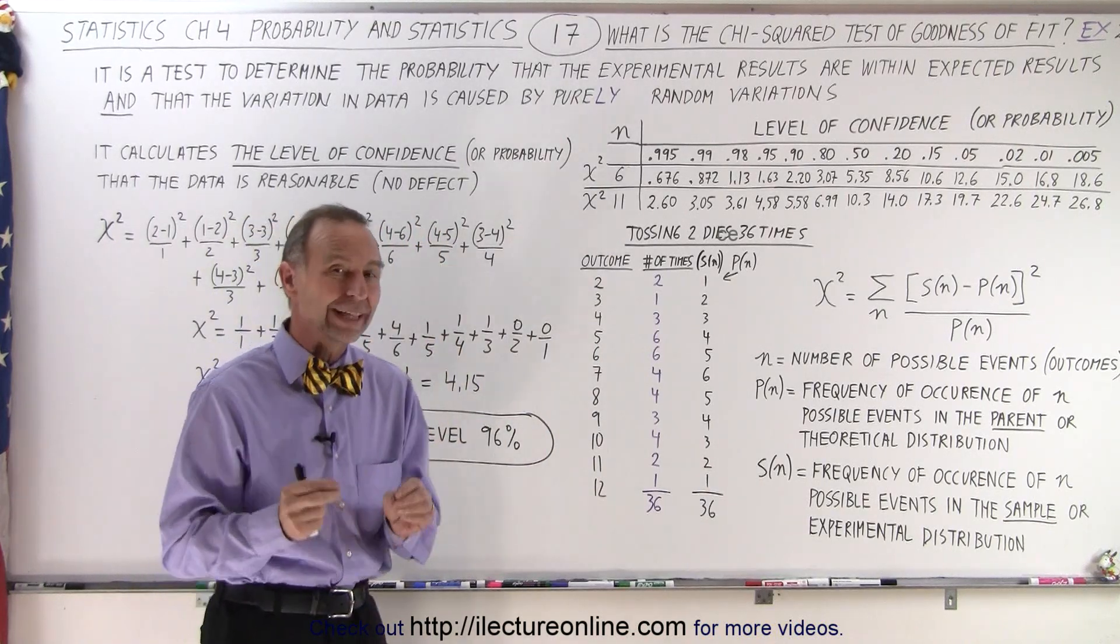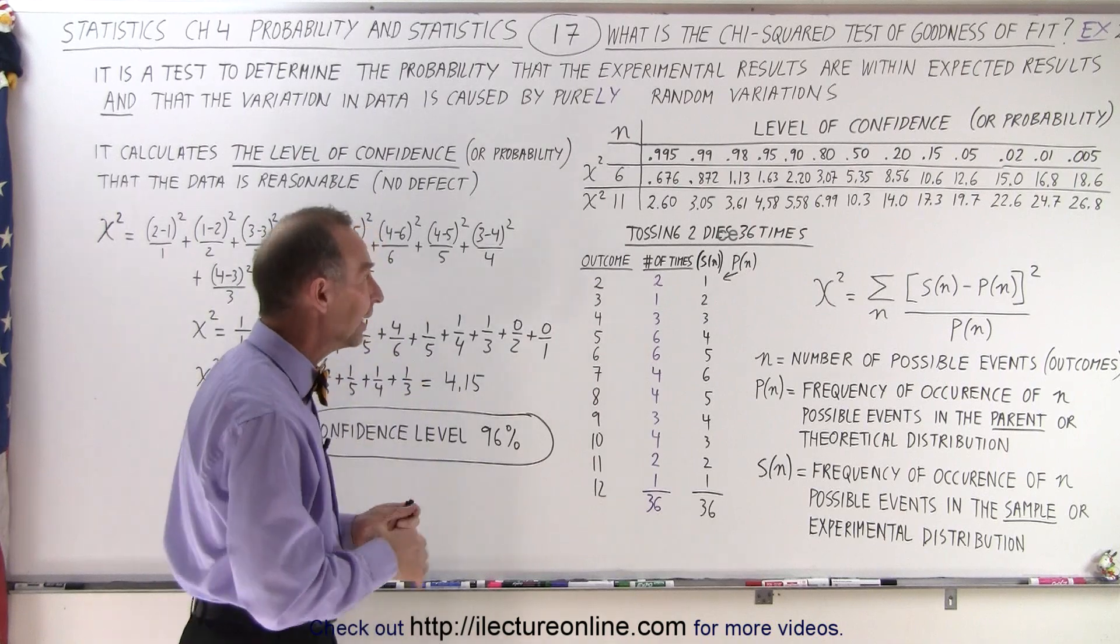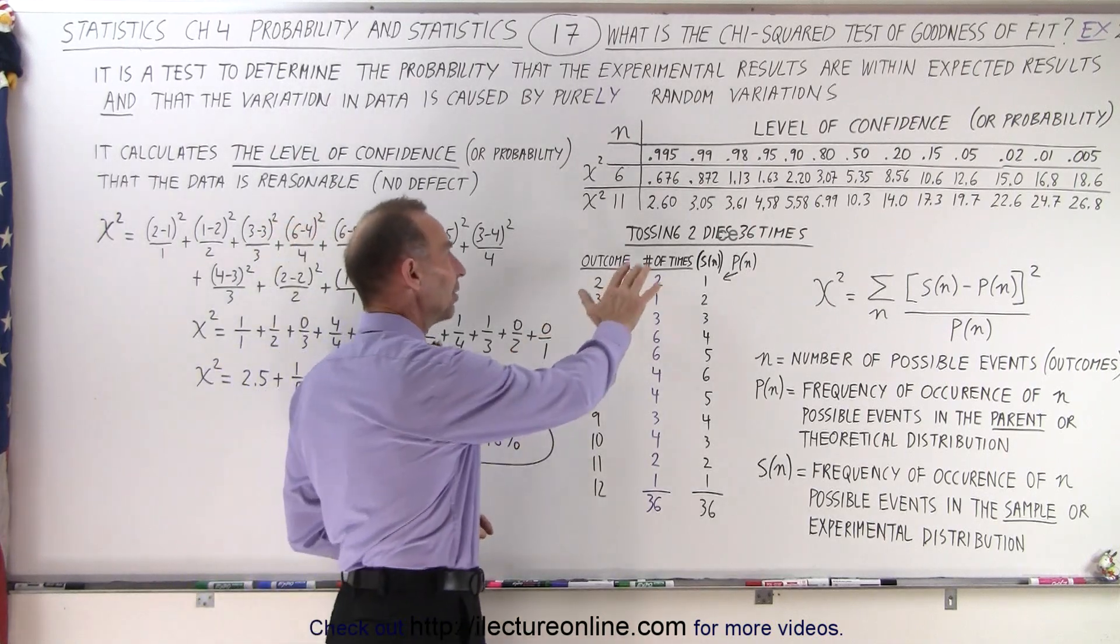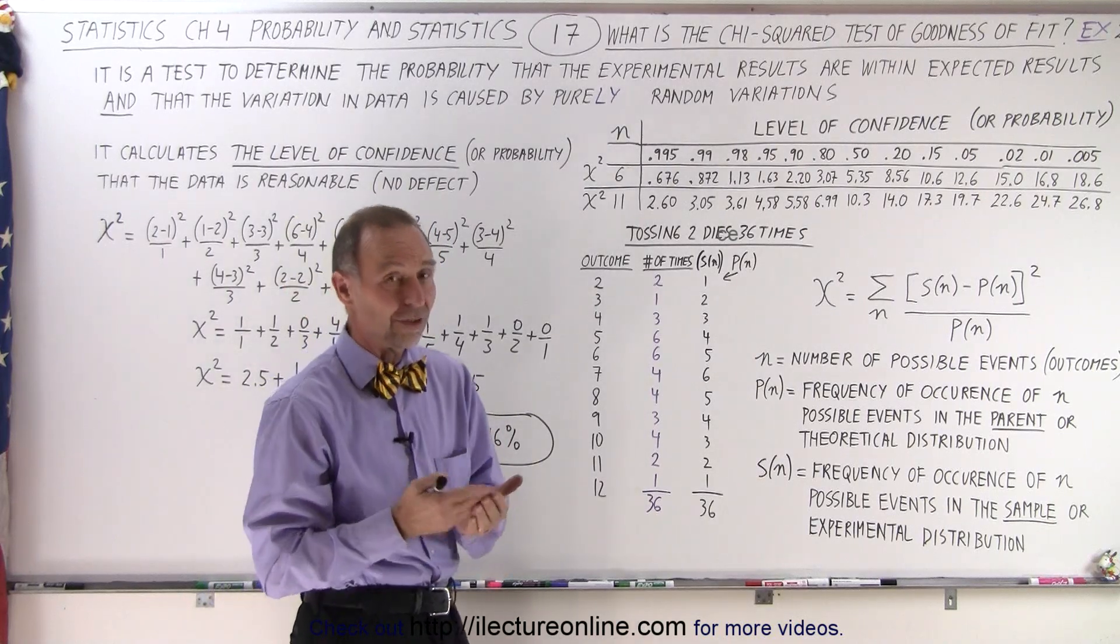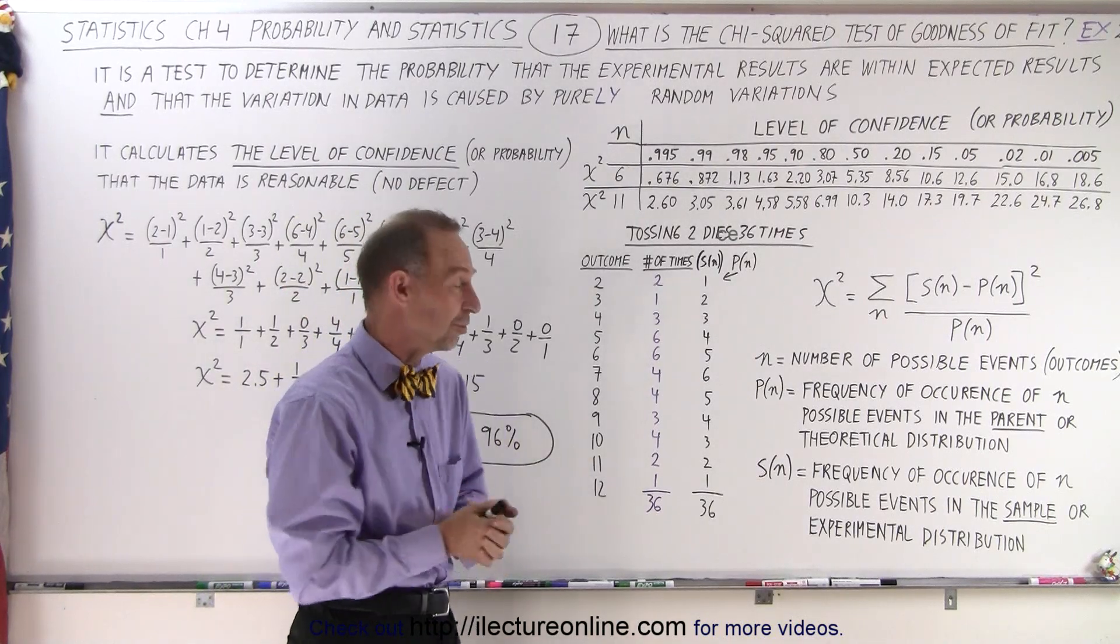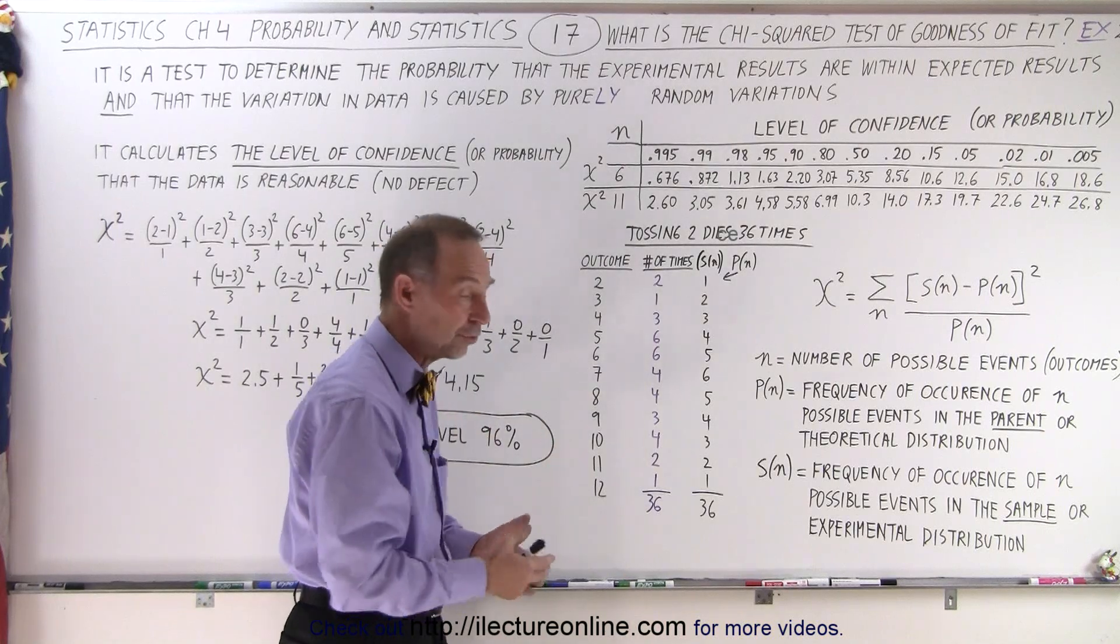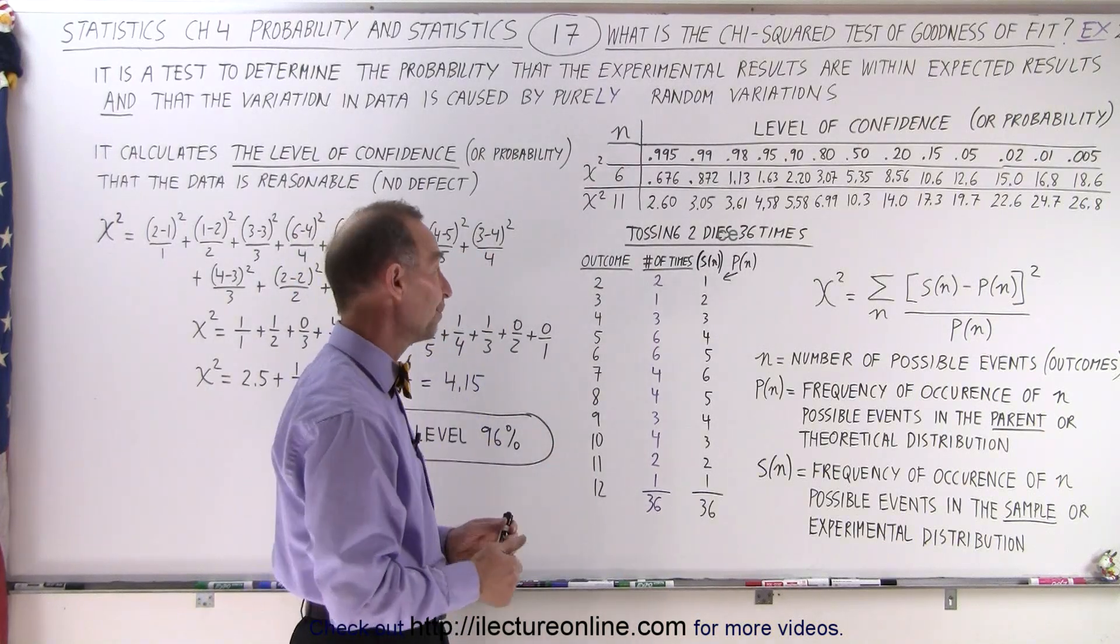to find the level of confidence that the data we have is good, is tossing two dice 36 times. 36 times makes sense because there are essentially 36 different combinations in which the dice can land, and so therefore 36 was a good number.